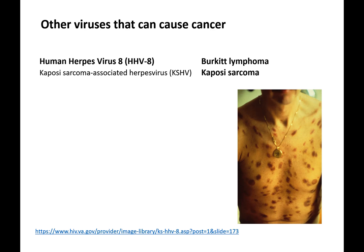Human herpesvirus 8, also called Kaposi sarcoma-associated herpesvirus, is seen frequently in people who have developed AIDS. Normally we clear this herpes virus, but with a deficient immune system it causes Kaposi sarcoma — purple lesions on the body — and is also associated with Burkitt's lymphoma. It is spread sexually and highly associated with AIDS.